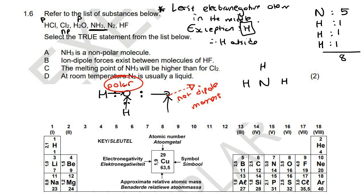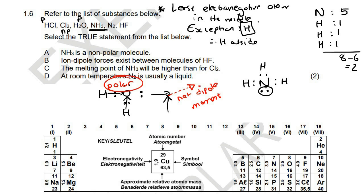Now we put a bonding pair of electrons between each of them. How many electrons have we used? We've used six. So eight minus six is two, and we've got two electrons left over. Normally you'd put those on the outside atoms, but not with hydrogen, because hydrogen only likes to have two electrons. So you put those remaining two electrons on the nitrogen. There is a lone pair of electrons, and we said that the lone pair changes the shape.